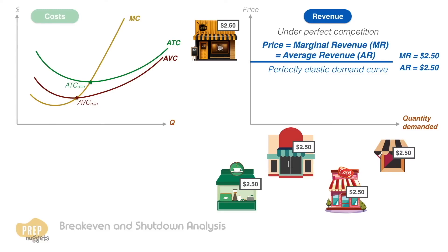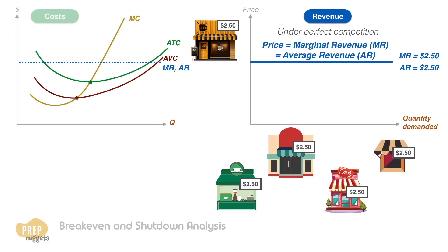Now let's fit this marginal revenue curve to the cost curves. If the cafe sells coffee at the market price of $2.50, the profit maximizing point will be the point where marginal revenue is equal to marginal cost.